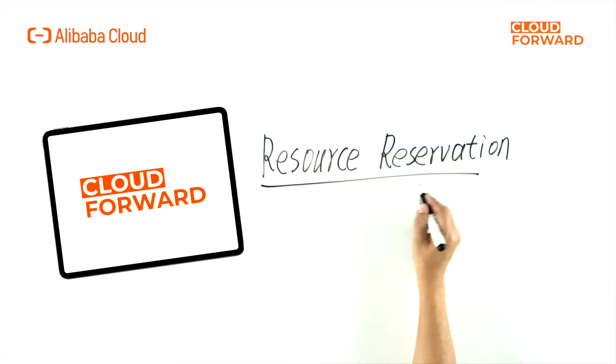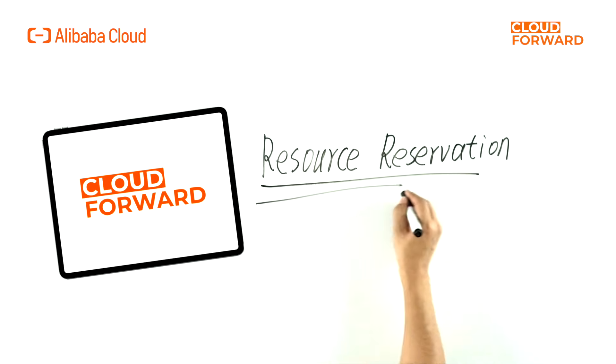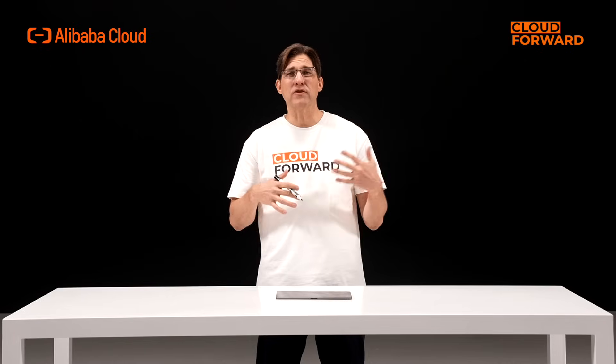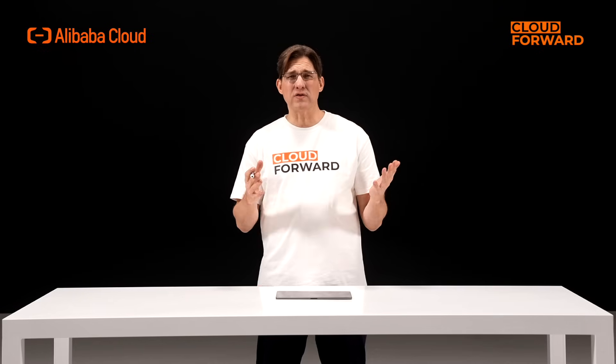Moreover, the resource reservation feature in ACK Cloud Native AI suite enables directed resource scheduling. It supports scenarios where resources are allocated and reused for specific tasks, and tasks undergoing in-place upgrades, maintaining resource reservations with 100% scheduling result determinism. Users can specify allocation strategies.